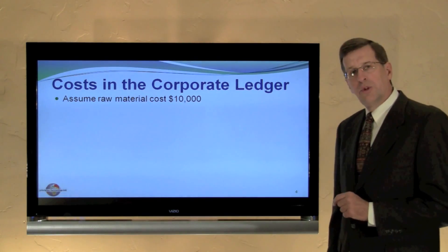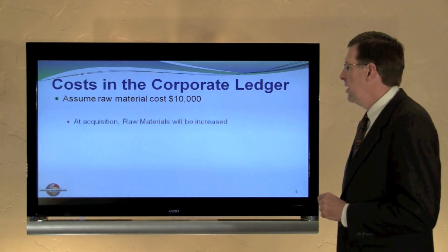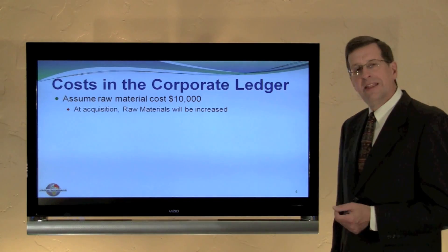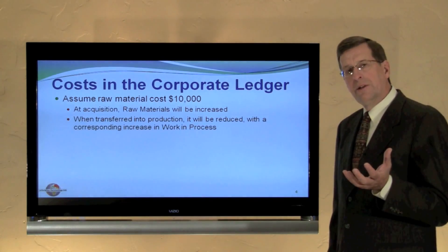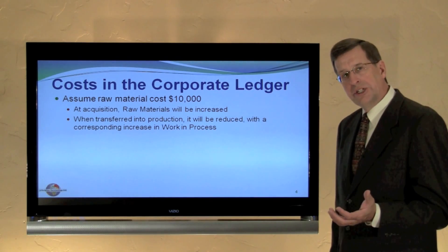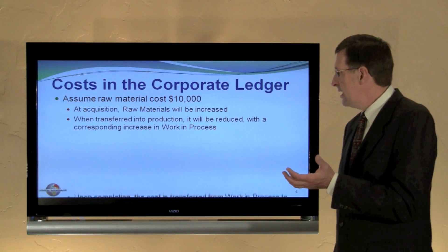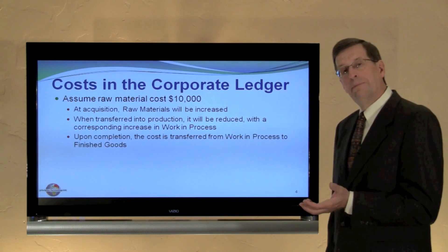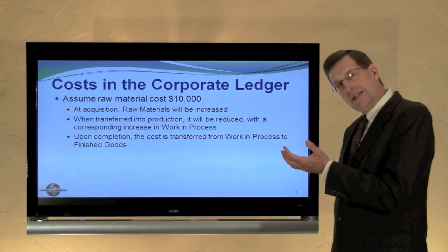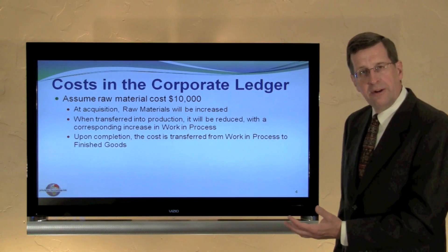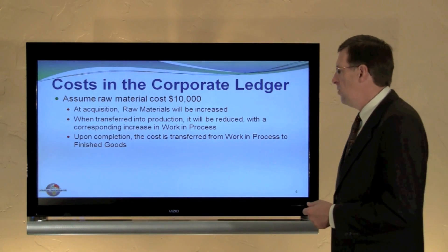Let's look at an actual numeric example focusing just on materials. We buy $10,000 of raw material. We increase raw materials inventory, then when we put it into production we decrease raw materials and increase work in process. When it's complete, we decrease work in process and increase finished goods. And when we sell it to a customer, we decrease finished goods and increase cost of goods sold.